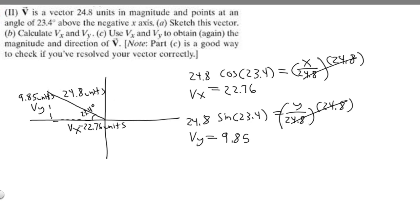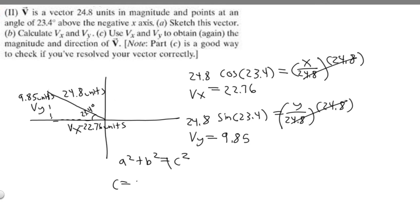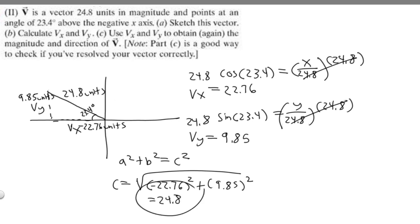We use the Pythagorean theorem: a squared plus b squared equals c squared. Let a equal negative 22.76, b equal 9.85, and c is what we're solving for — it should be 24.8. So c equals the square root of (negative 22.76) squared plus (9.85) squared. If you go ahead and do this, you get 24.8, which is exactly what it should be. It checks out.